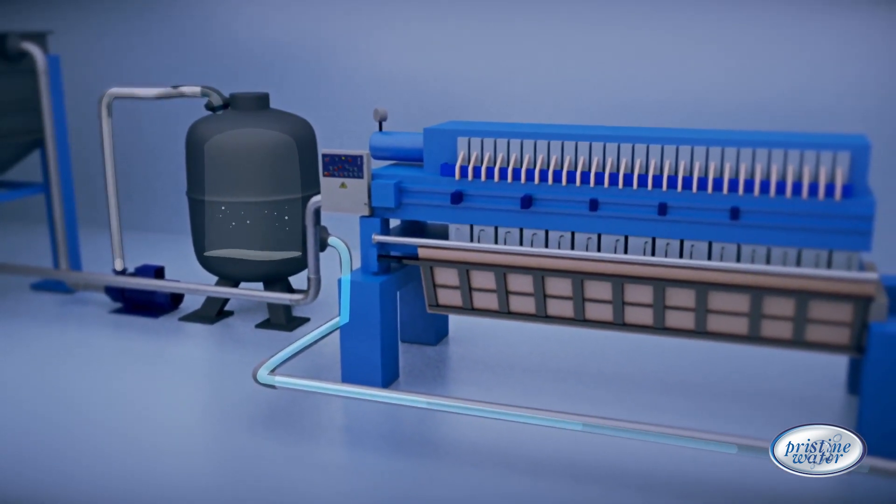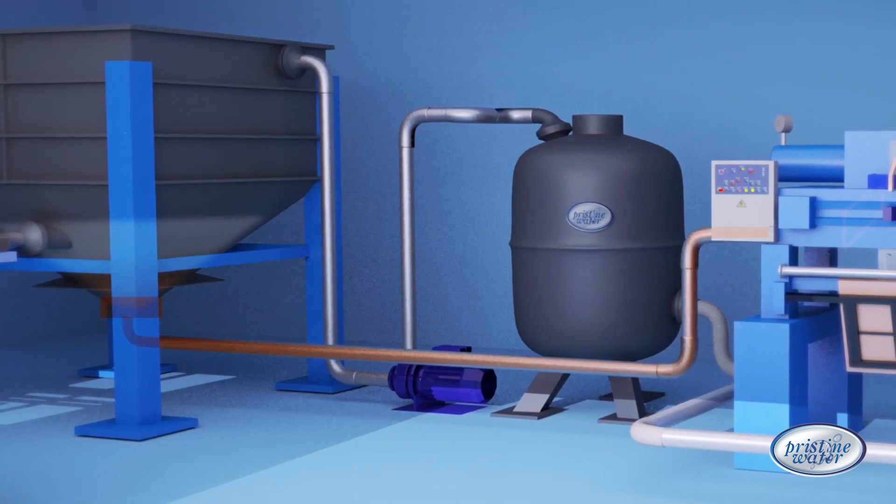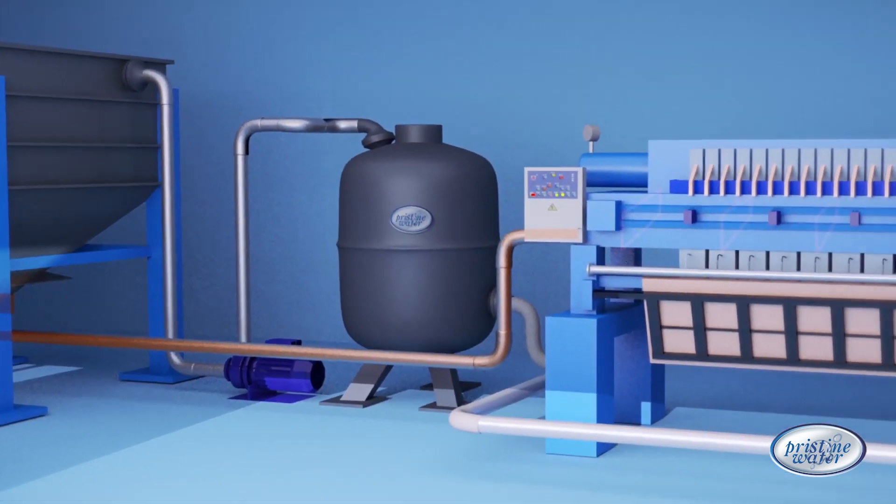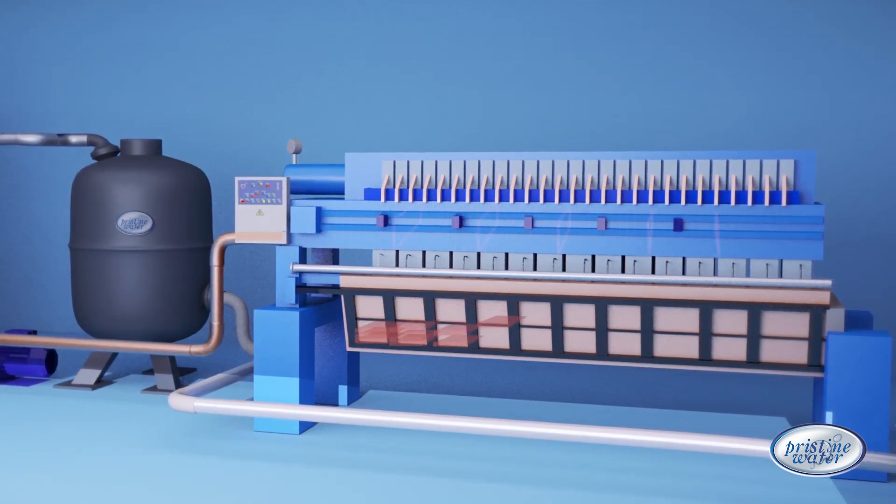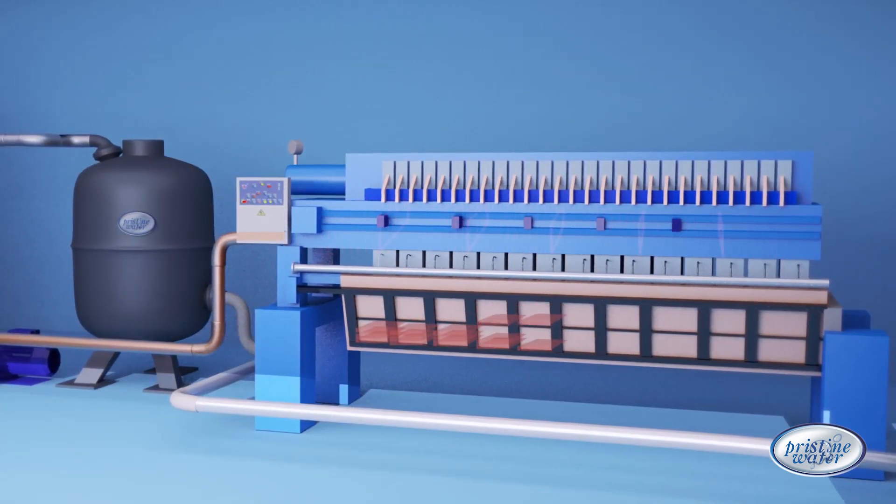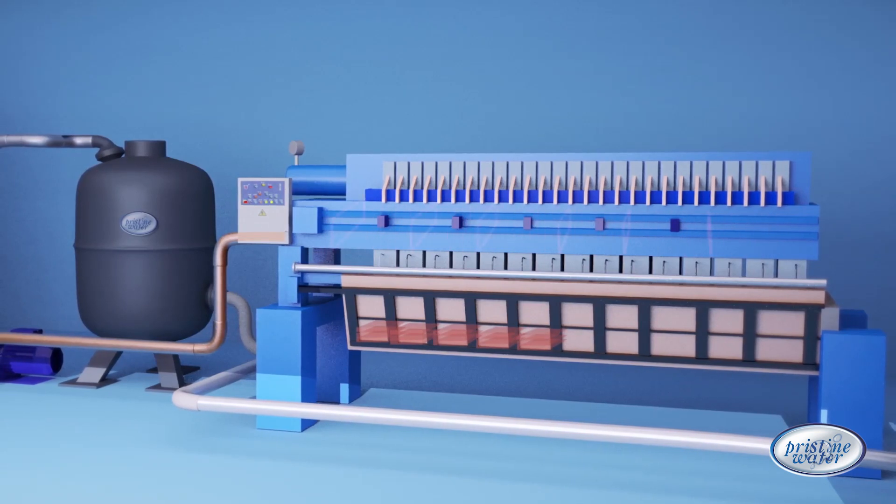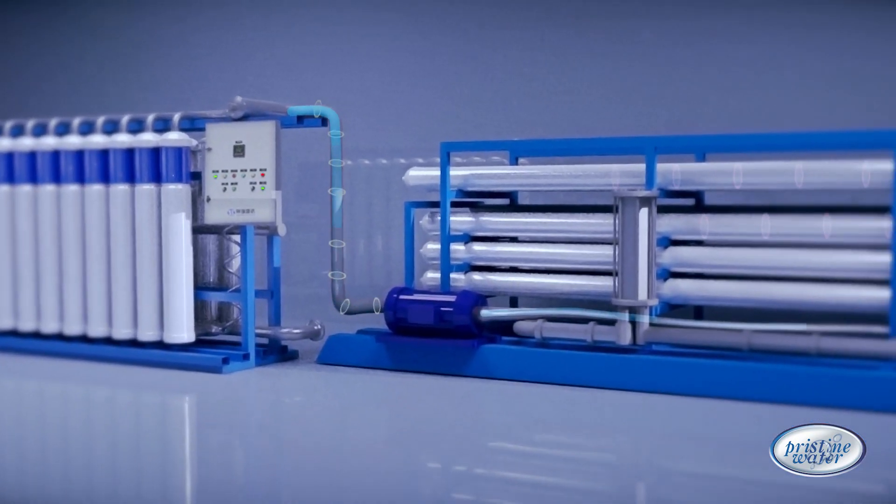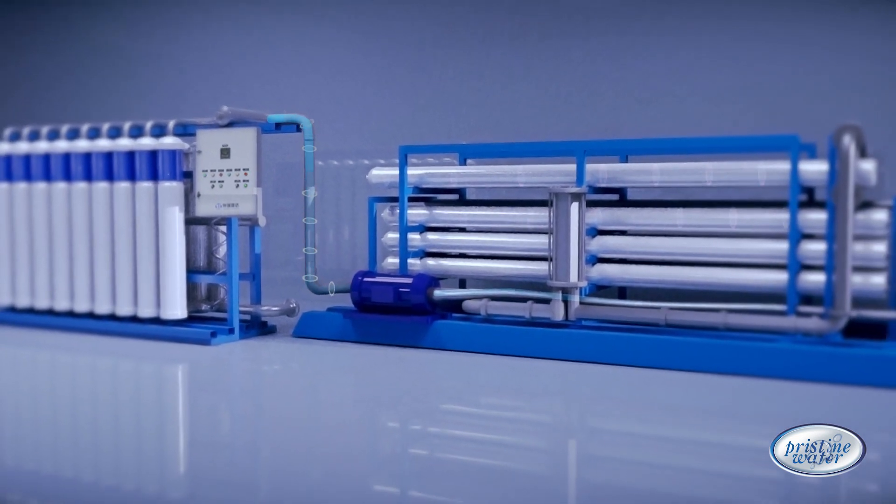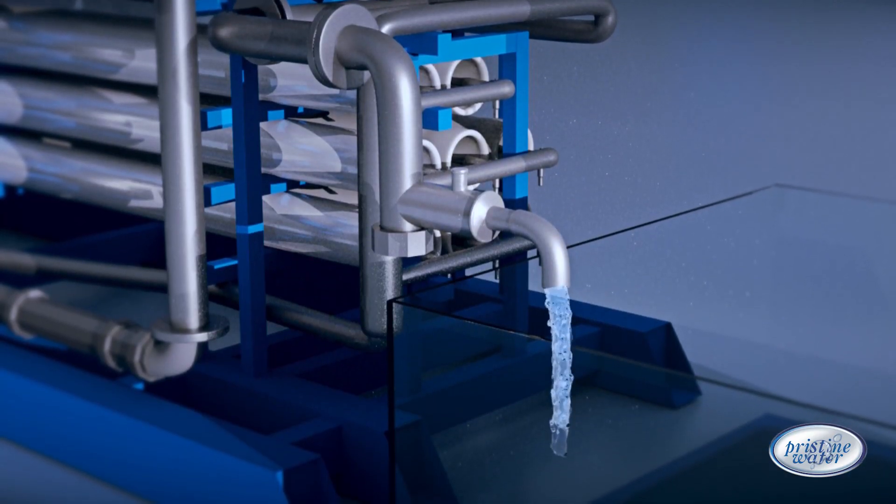The sludge generated in the settling tank and filter are sent to the filter press where the water from the sludge is removed. This dewatered sludge is converted into dry cakes and disposed of. If needed, the water can be further treated with ultrafiltration or RO to get drinking quality water.